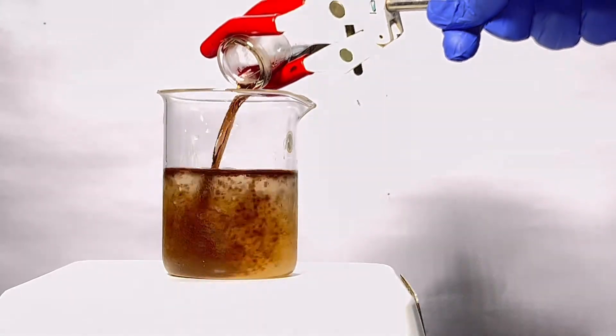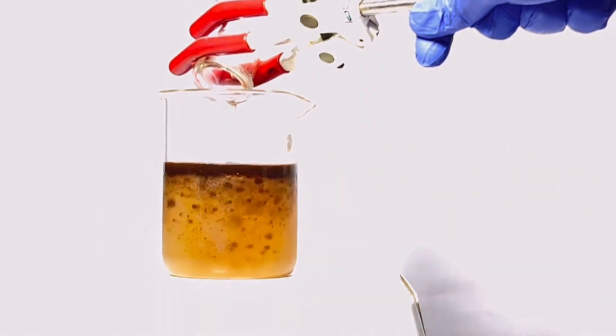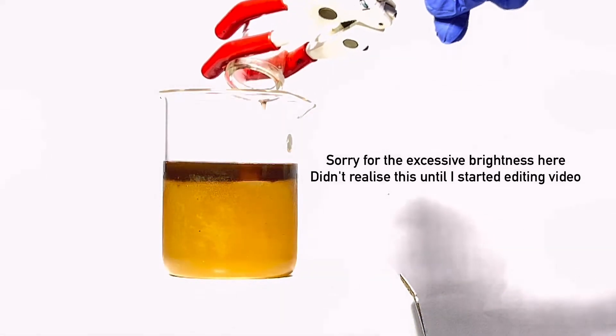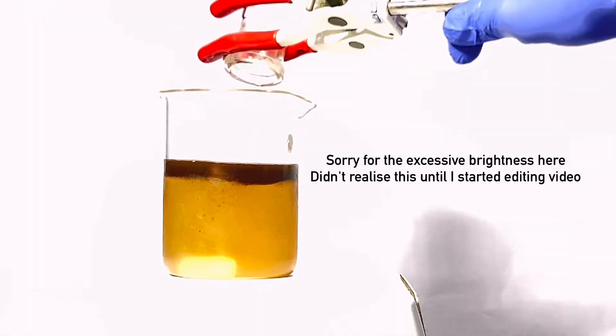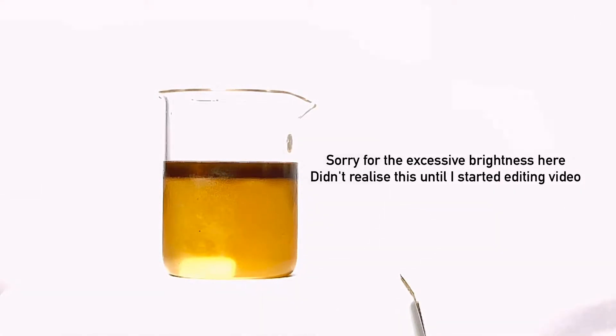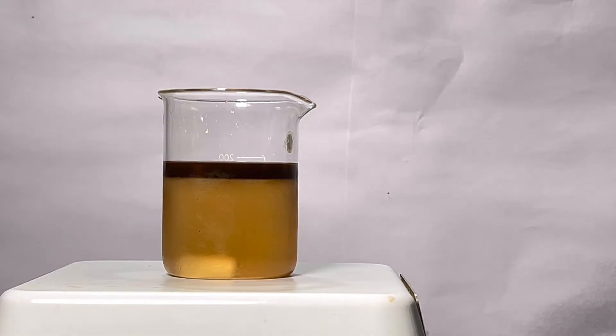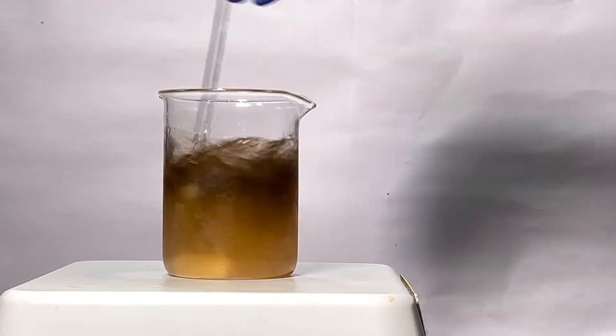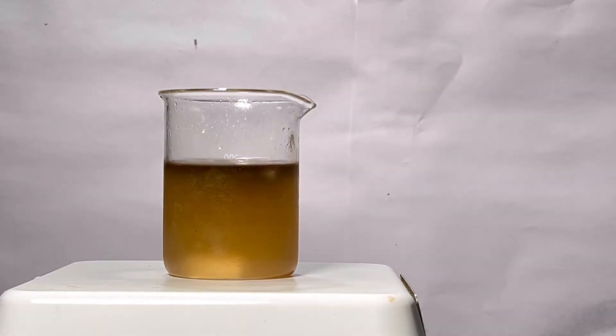A point to note here is that the water should be ice-cold, otherwise the heat produced when the concentrated sulfuric acid is dissolving in water would cause the liquid to splash everywhere. Once everything is added to the beaker, we see a dark brown upper layer and that is the isoamyl acetate in its crude form. Now we will proceed with the purification.